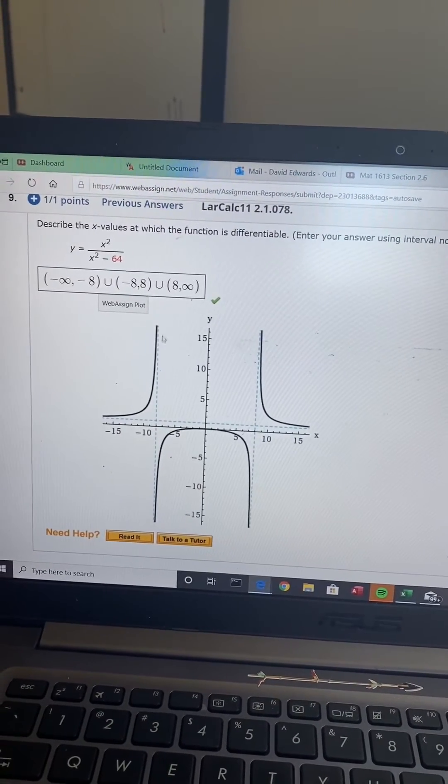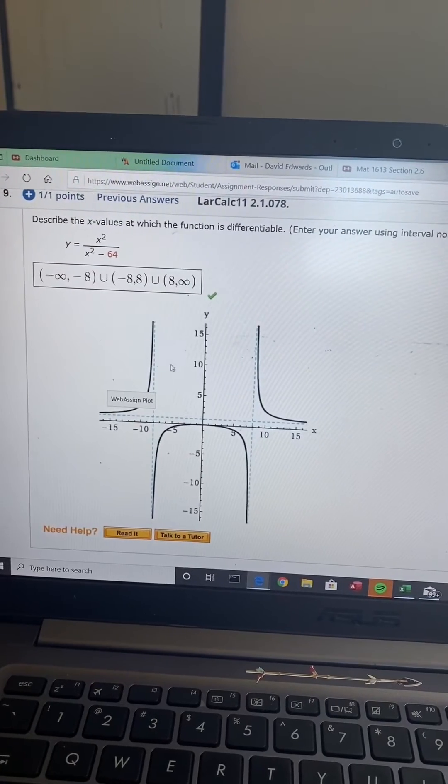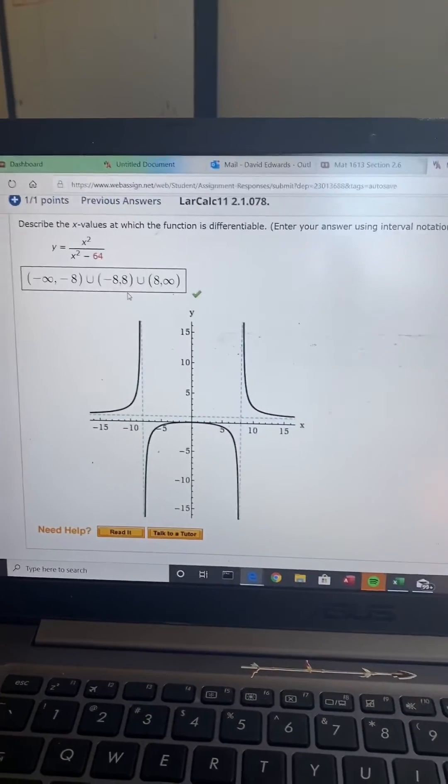This is how it looks right here on your graph. So on your graph right here, you have your vertical asymptotes, and this is how you write it in union sign.